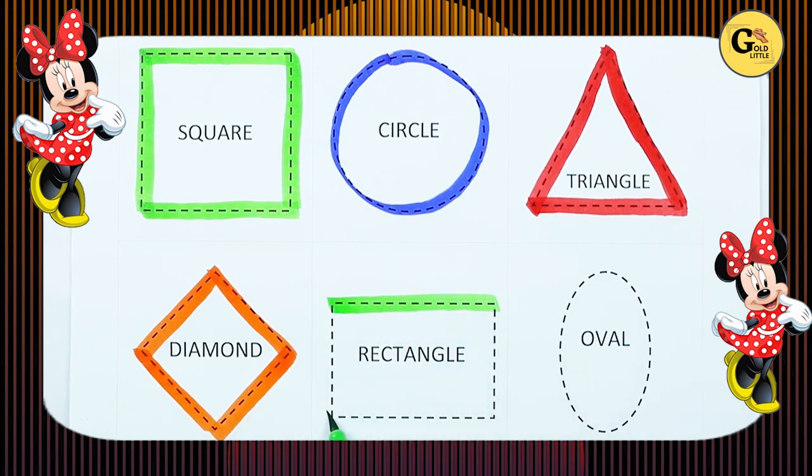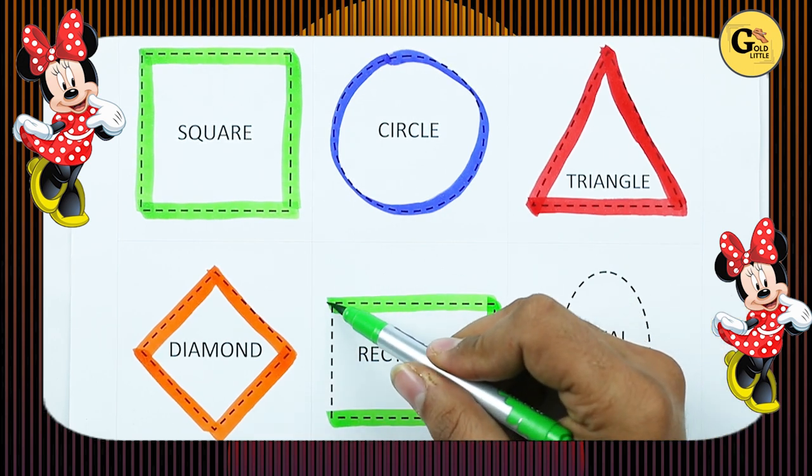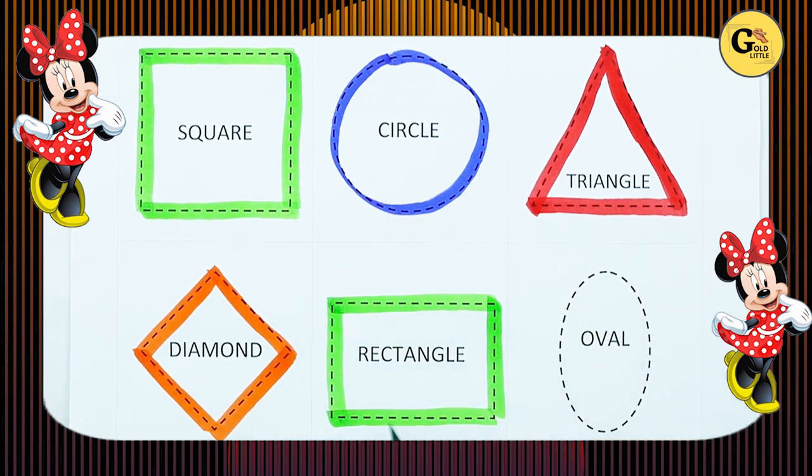One slipping line, two slipping line, one standing line, one standing line. It's a rectangle with green color.